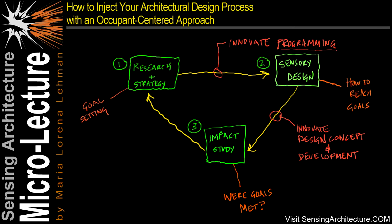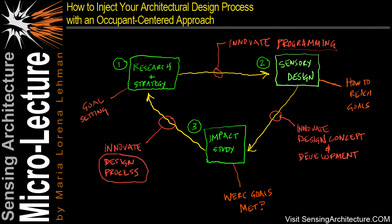A third innovation point occurs between steps three and one. You take information uncovered during your impact study and apply that to research and strategy for future projects. You can actually begin to modify and make improvements to the design process you use, based on successes or failures uncovered in your projects, other projects, or design experiments that you've undertaken.